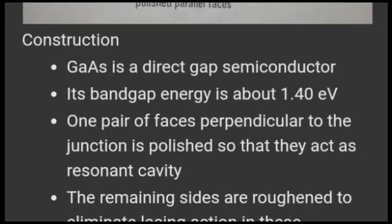Gallium arsenide is a direct gap semiconductor. Semiconductors are of two types: direct gap and indirect gap. In reciprocal space, the crystal's electrons are described using Brillouin zones, which represent K-vectors. The electrons have K-vectors in the conduction band, and in the valence band the K-vectors are different.